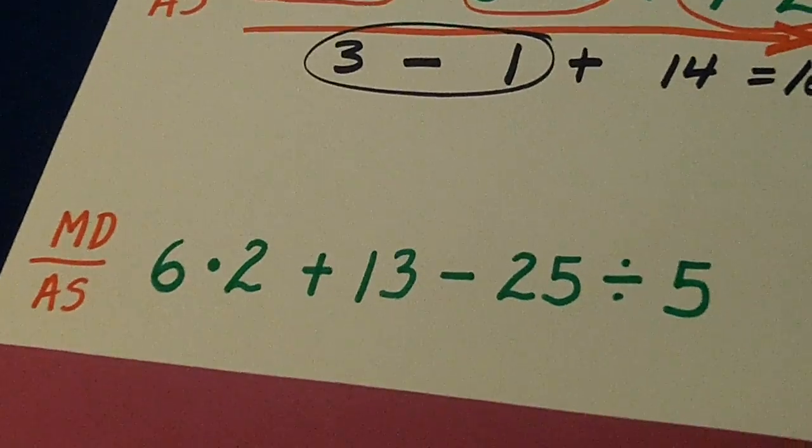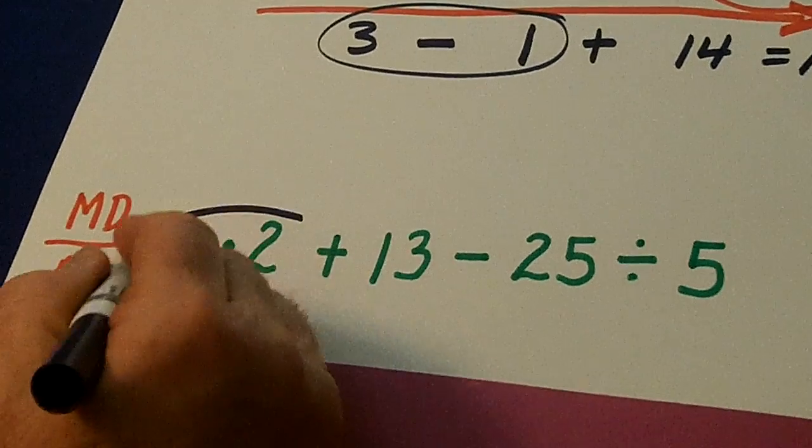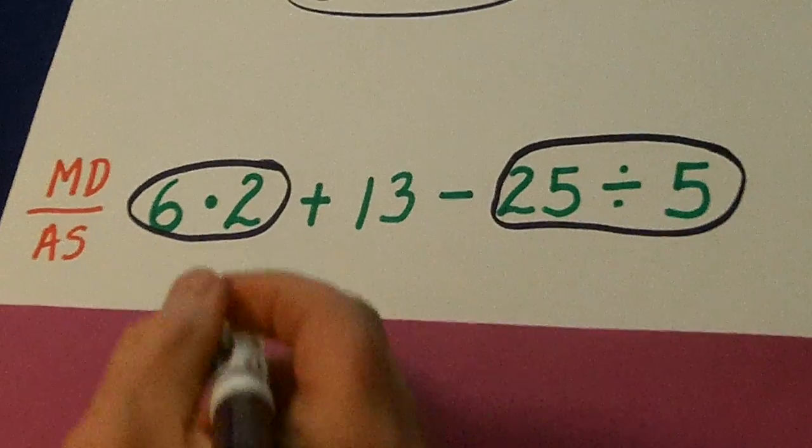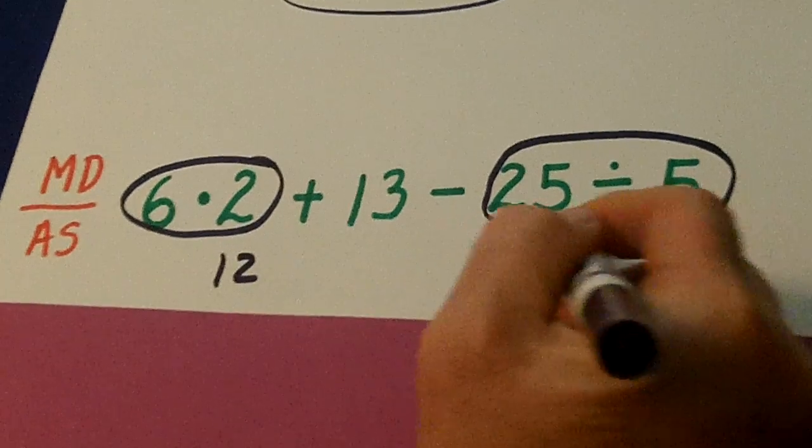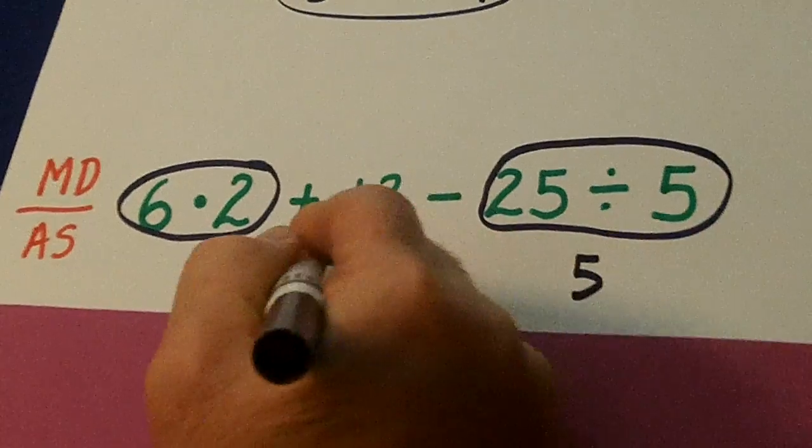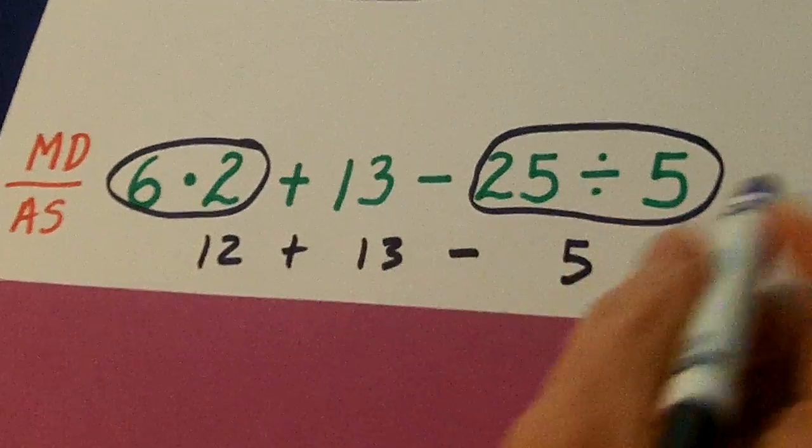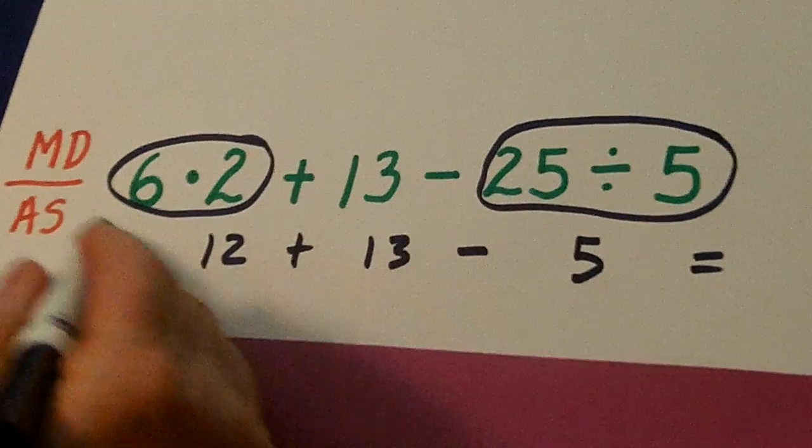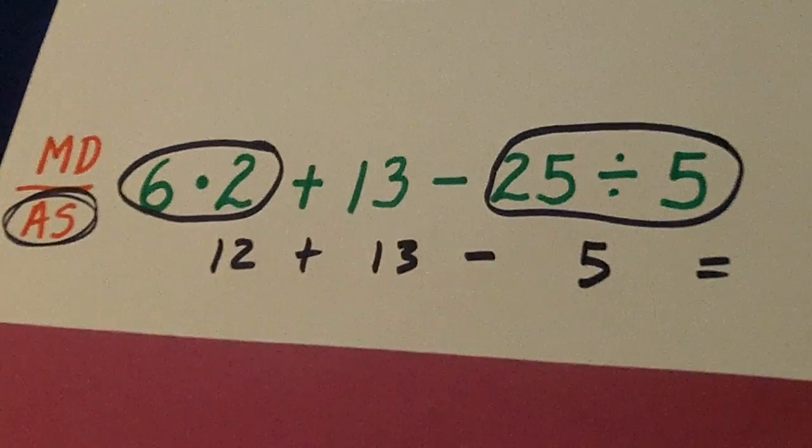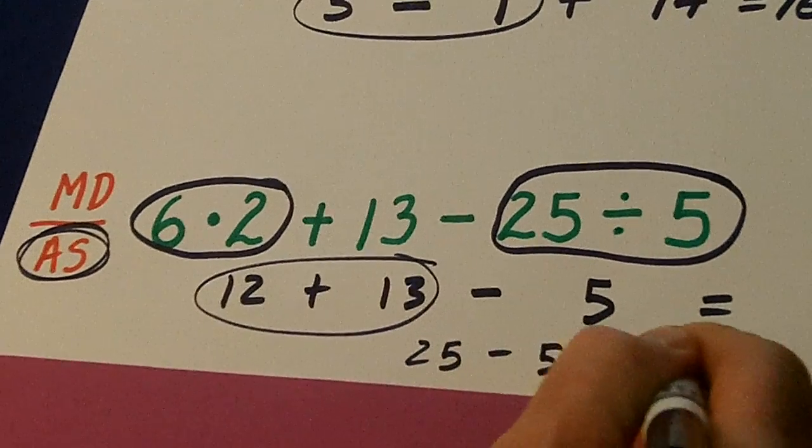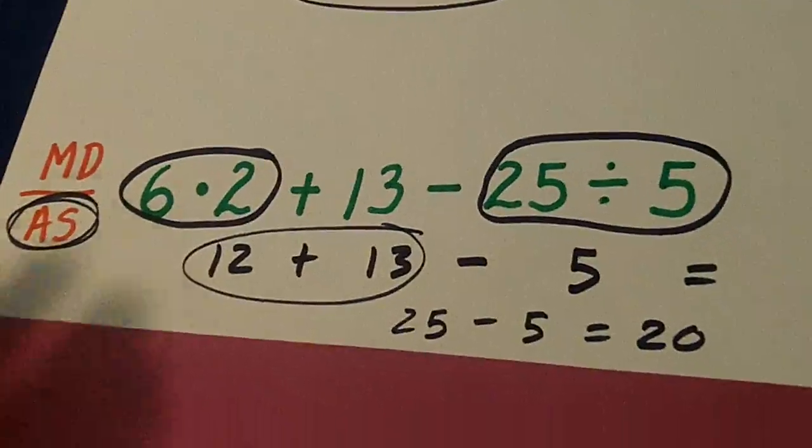Let's go right down here. Any multiplication and division, we're going to do those first. And so we get 12 and we get 5 plus 13 minus 5. Plus and minus, those are on the same level. So we'll do this one first. 25 minus 5 is 20.